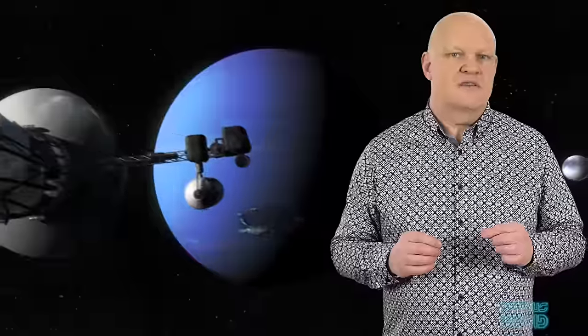By the time Voyager 2 had reached Neptune, it had swung by Jupiter, Saturn, and Uranus, traveled 7 billion kilometers, and was still within 100 kilometers of its target, all with mid-1970s technology.